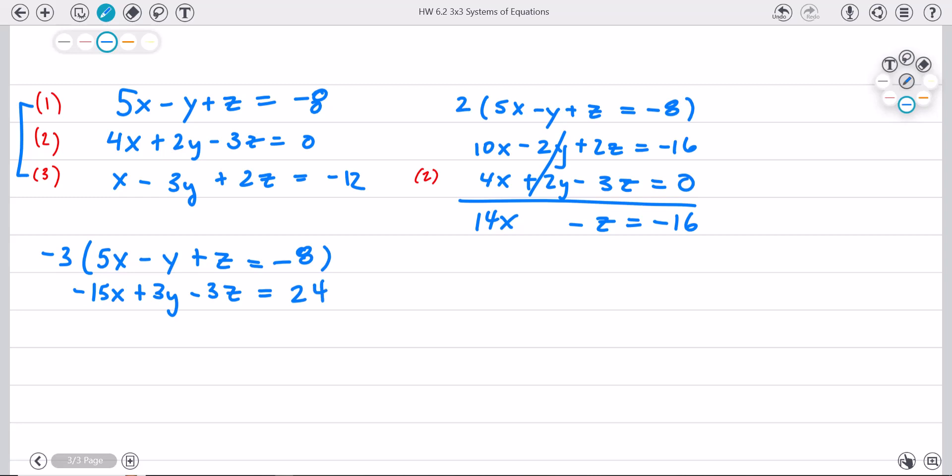All right, so let's get my equation three, and let's add these two together. So x minus three y plus two z equals negative twelve. Negative fifteen x plus x is a negative fourteen x. The whole point, canceled those out. I get minus z.